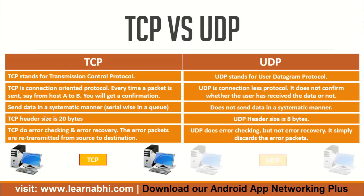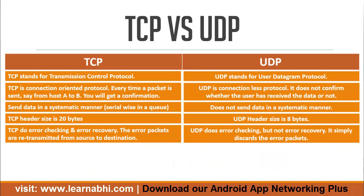On the other hand, UDP does error checking but there is no option for error recovery. Whenever data is sent using UDP, the protocol does error checking, but if it finds any error in the data, it will simply drop it. This is one of the disadvantages of UDP.